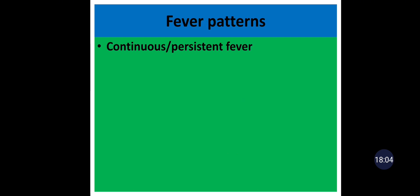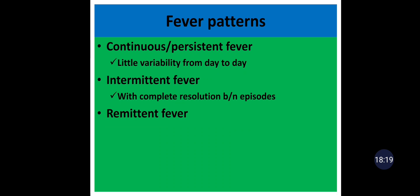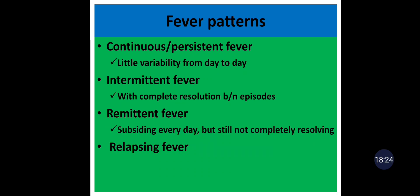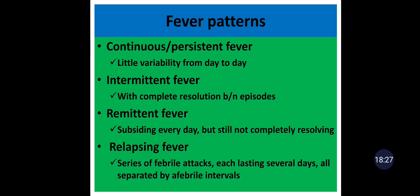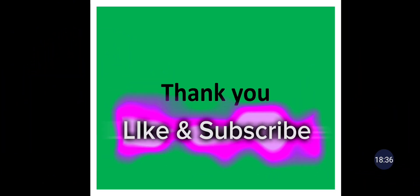Fever patterns: continuous or persistent fever shows little variability from daily temperature. Intermittent fever shows complete resolution between episodes. Remittent fever subsides every day but does not completely resolve. Relapsing fever consists of a series of febrile attacks lasting several days, separated by afebrile intervals. This concludes the discussion on vital signs — if you have any questions and suggestions, please write in the comments section.